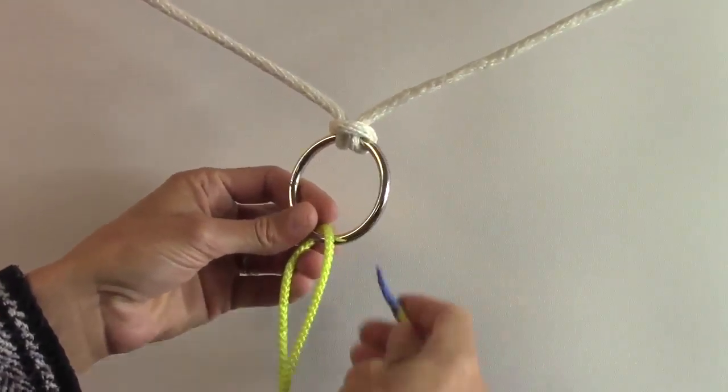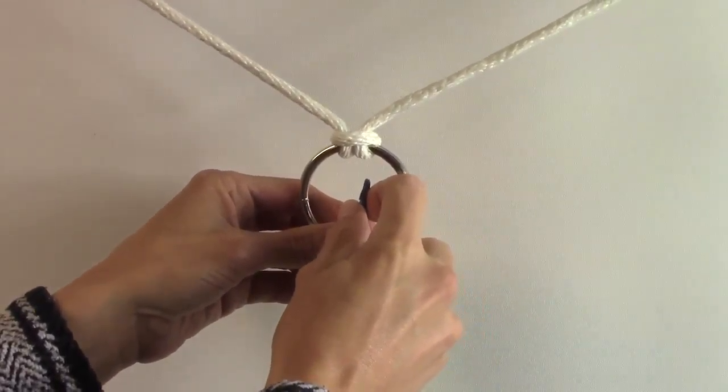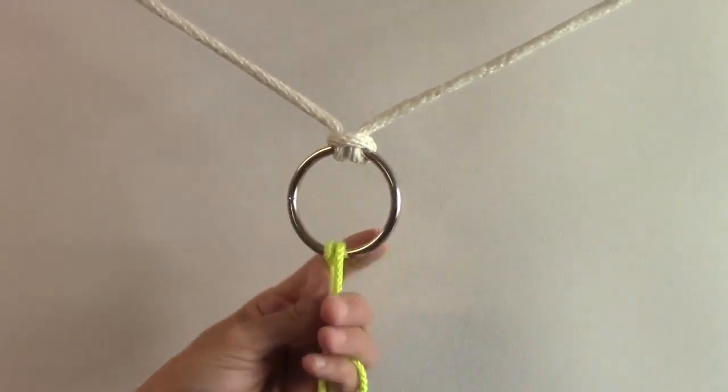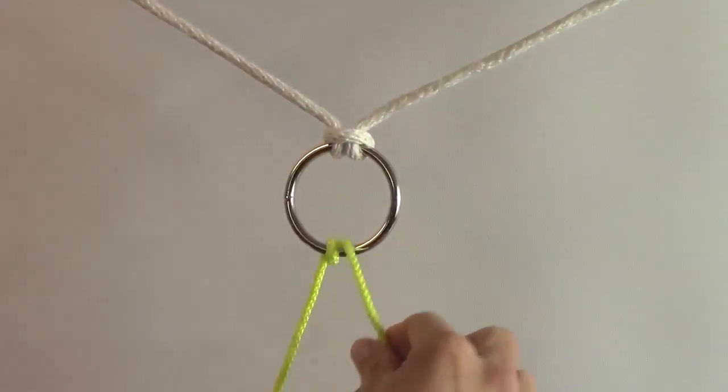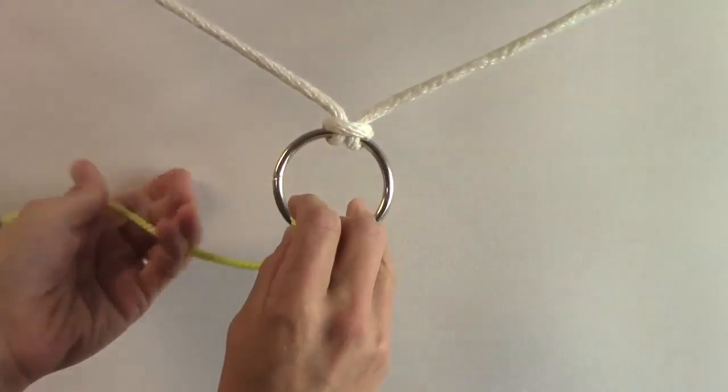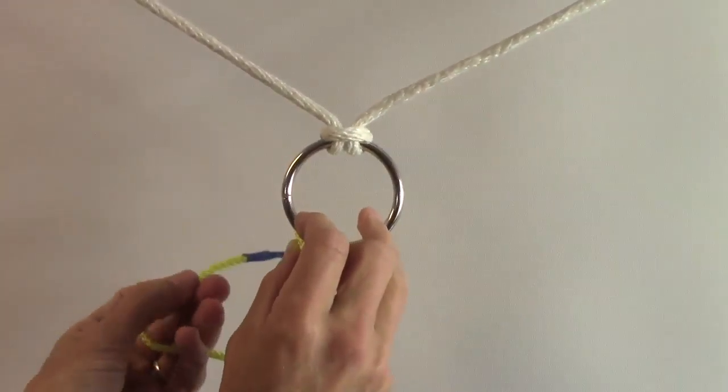I'm going to do it again, up through and around. So now we have two turns around the ring. Then I'm going to bring this behind my standing line and put it underneath both of the lines that are going around my ring.